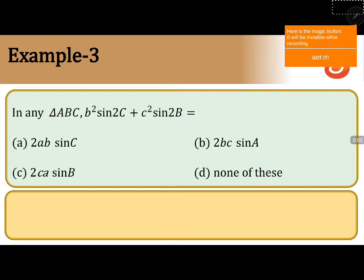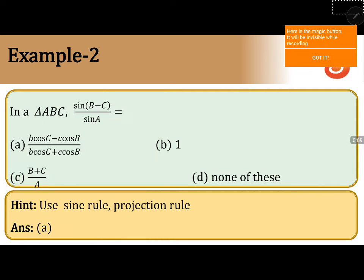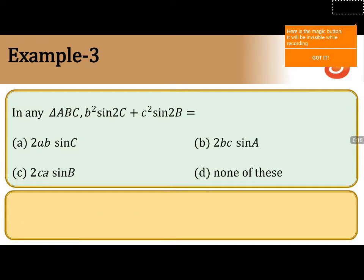Take b square sin 2c plus c square sin 2b. In this, b square into 2 sin c cos c, c square into 2 sin b cos b.